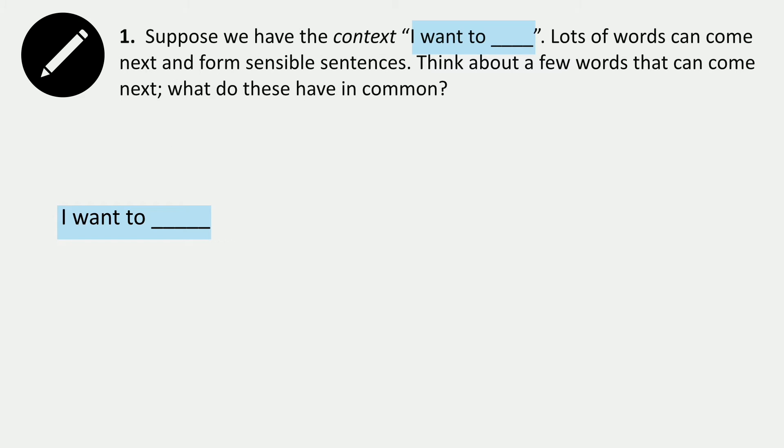In order to understand this a little bit more, I want us to think about what prediction of the next word in a particular context looks like. Suppose we have the context, 'I want to blank,' and we're trying to think about what word might come next. There are a lot of words that could come next. I want you to think about the words that could come next and try to identify something that these have in common. I'm going to stop here for a second. You can pause the video and work on this.